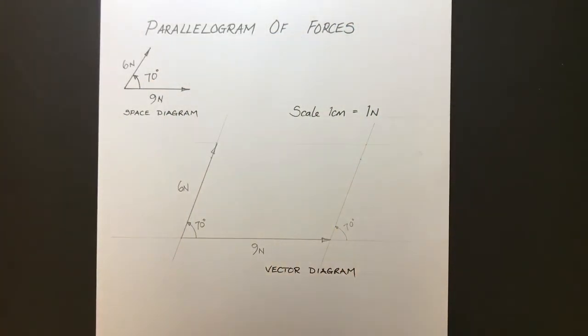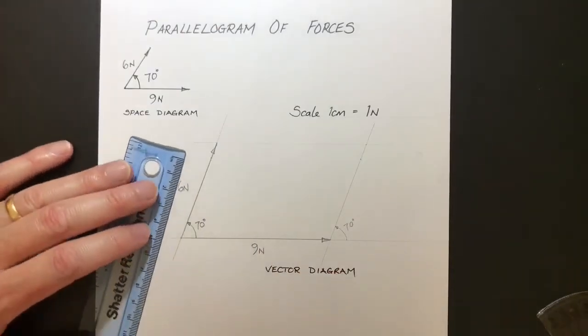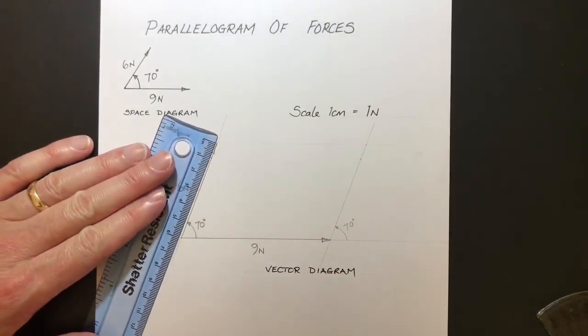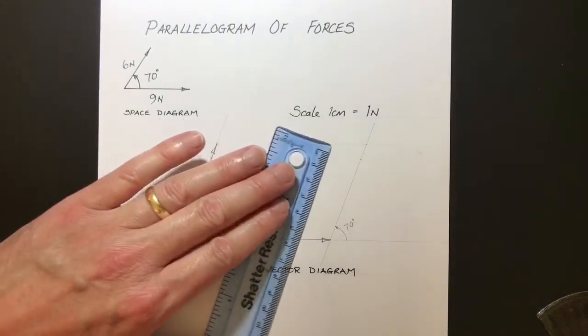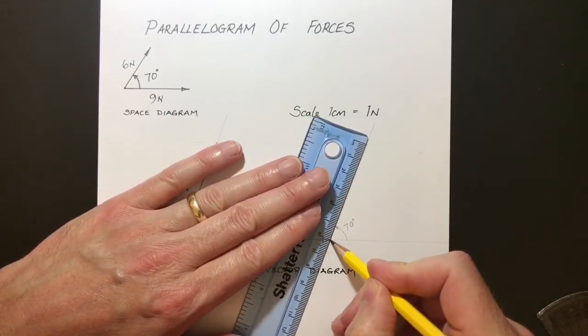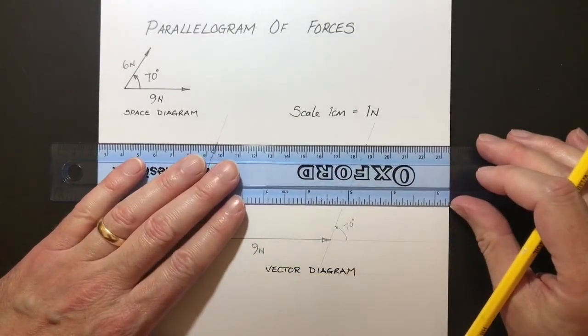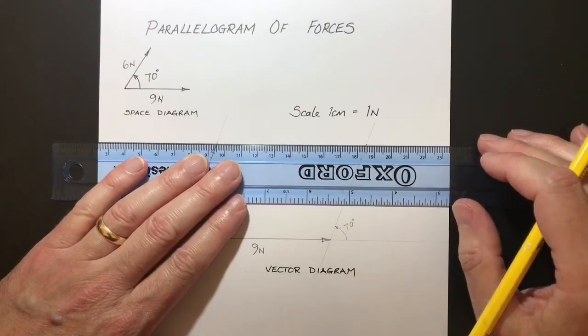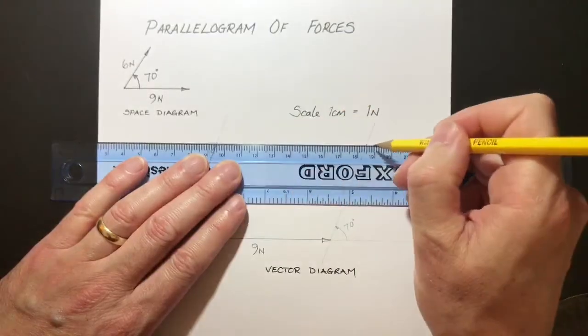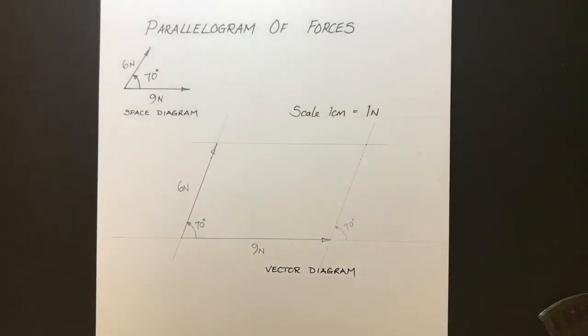Now, we need to draw a parallel line that's parallel to this vector here. Now we could try and work out what that angle is supposed to be up there and then draw it in. But the easier way to do it is knowing that this is six Newtons and knowing that it's six centimeters long, we can just take that same measurement up here, line the sixth there, and I can place a mark on there. And that is the length or the magnitude of that line. Now, if I go from the top of the six Newtons and line it up with the mark I've just made, I can then draw my last parallel line. There we go. There's our parallelogram.